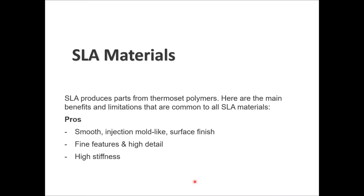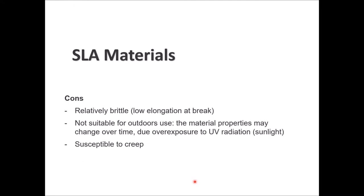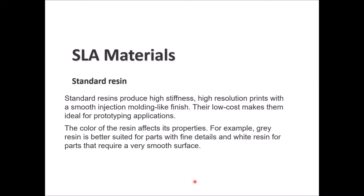We are talking about SLA 3D printing technology materials. SLA can give you parts from certain thermoset polymers. The main benefits and limitations common to all SLA materials — the good sides are smooth injection mold-like surface finish, fine features, high detail, and high stiffness. The bad sides: it is considered relatively brittle, has low elongation at break, and is not very good for outdoor use because the material changes over time and is sensitive to ultraviolet radiation and susceptible to creep.